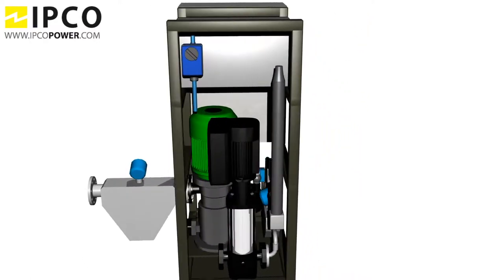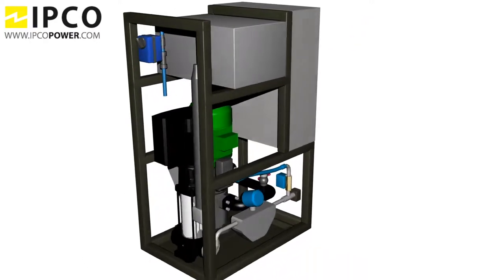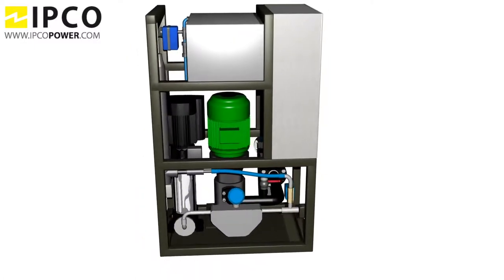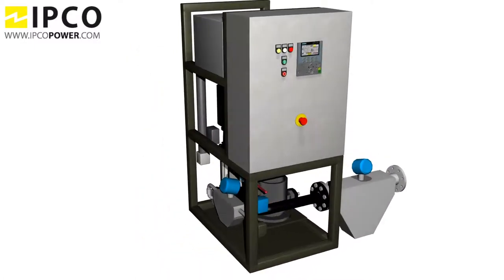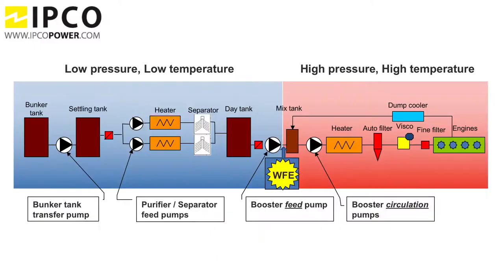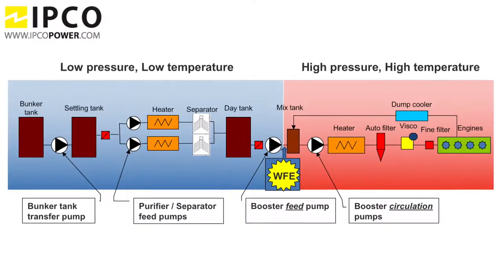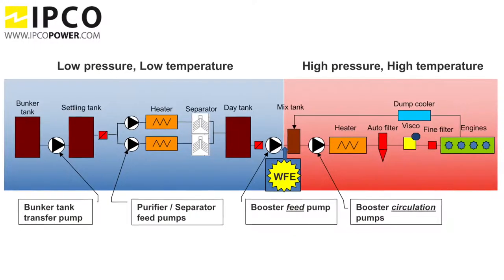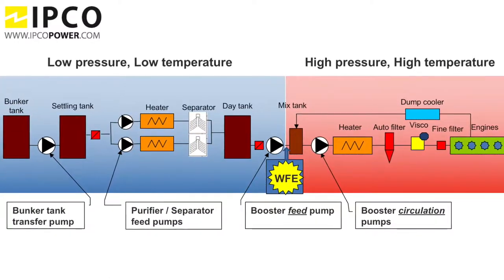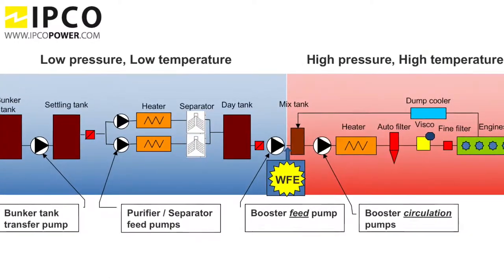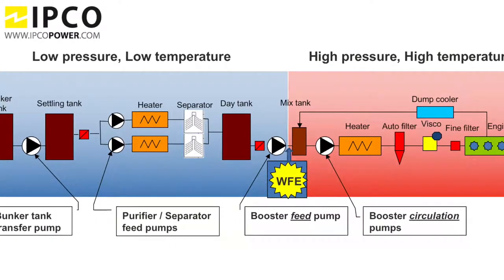Here you can see the FID injector with its main components: the homogenizer, water pump, water tank, main cabinet, and several valves and sensors. The FID injector is installed between the booster feed pump and mix tank, so before the booster circulation. This way the system will always be able to precisely add the required water percentage.